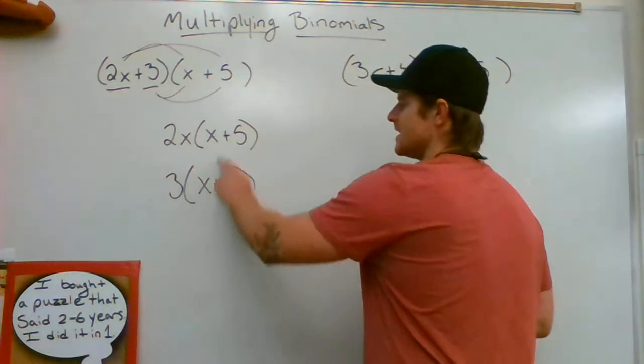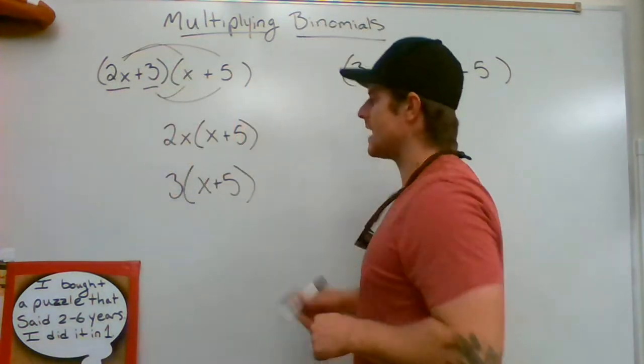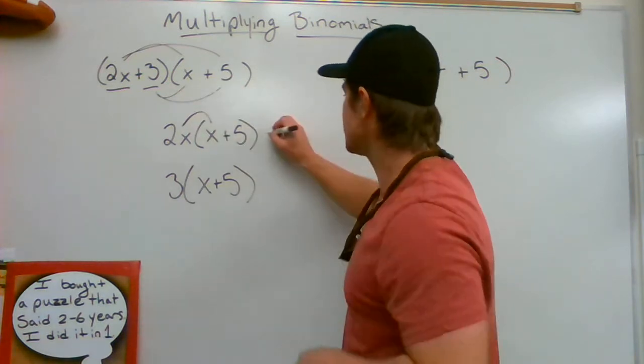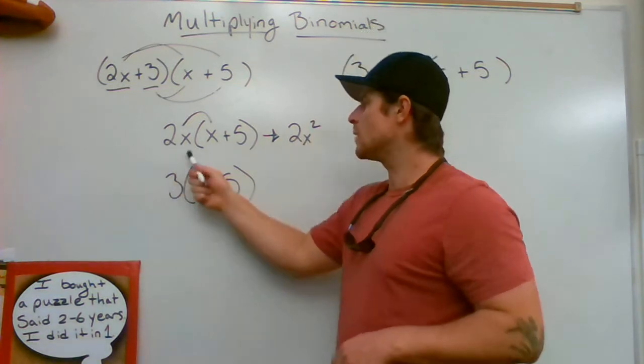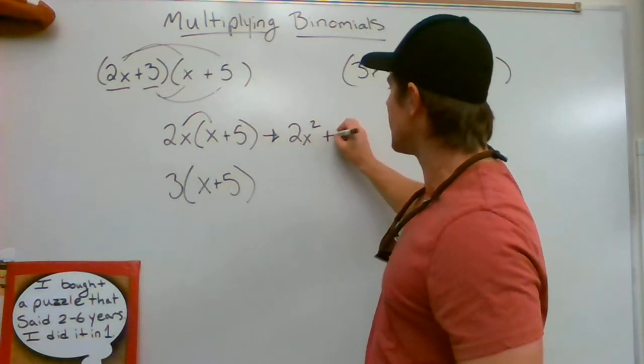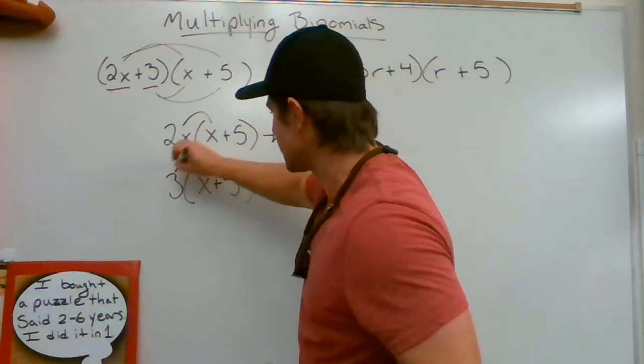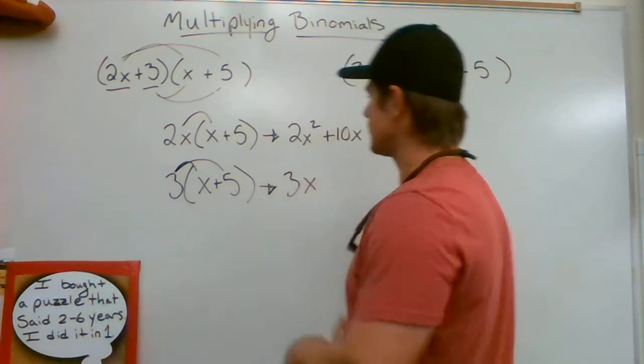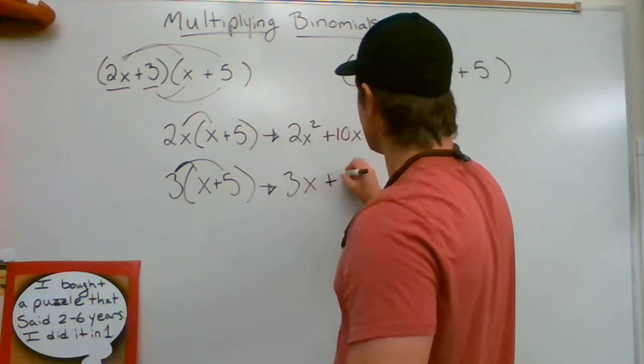Notice this stays the same—we just have to multiply all of these terms out. So 2x times x gives me 2x squared, and 2x times 5 gives me positive 10x. Now I'm going to distribute this 3 to the x and to the 5, where I'm going to get 3x, and 3 times 5 is going to give me 15.